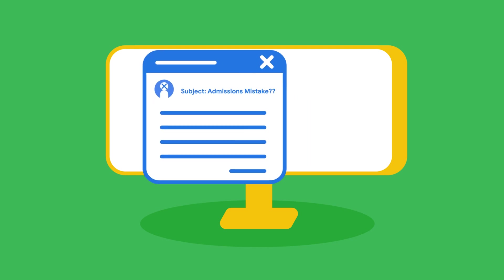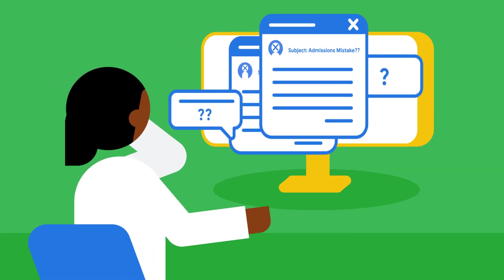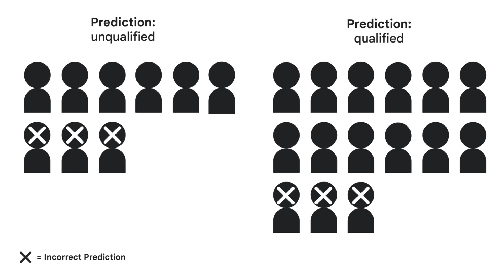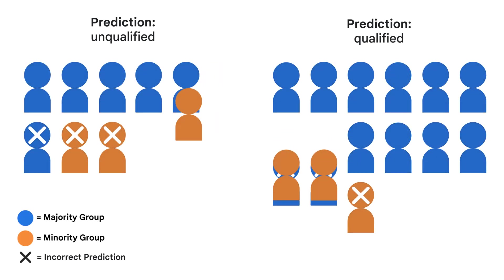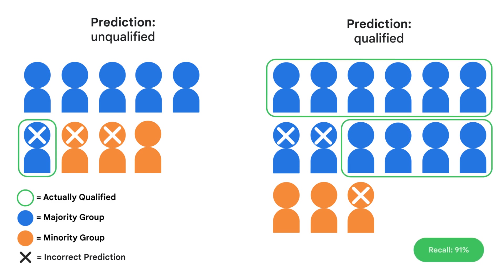But right before decisions were sent out, they received a concerning email from the head of admissions, suggesting there might be a problem with the classifier's predictions. The admissions committee took a closer look at their model's predictions, but this time they split them out by demographic group. Qualified students in the majority group were nearly twice as likely to be admitted to the program as students in the minority group.